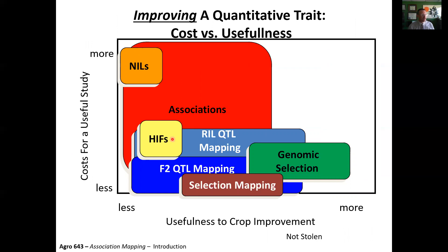If your goal is to improve a quantitative trait, we should think about this in terms of cost versus usefulness. The cost for a useful study is going to be a lot higher for making a near-isogenic line than for just taking an F2 population or doing selection mapping from previously selected material. Heterozygous inbred families are a great tool beyond NILs or RILs. In terms of usefulness for crop improvement, genomic selection is by far more useful than any type of association mapping. A near-isogenic line is basically useless for actual crop improvement, but it is good for identifying causal genes.